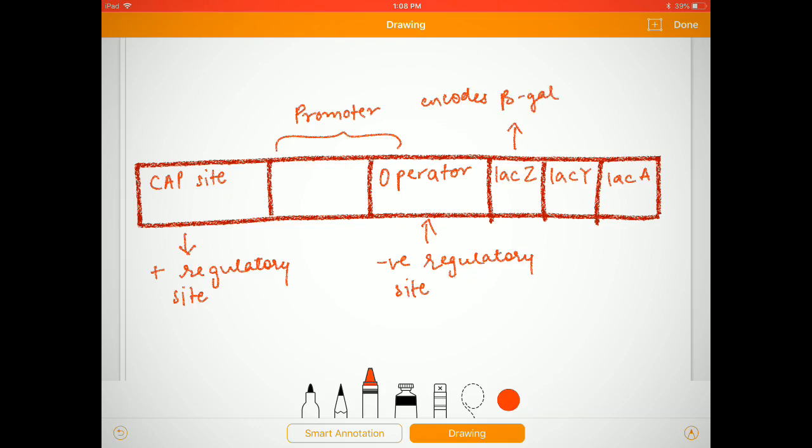Then there is lac z, which basically encodes for beta-galactosidase. Now this enzyme has the capacity to split lactose into monosaccharides. Then we have lac y, which encodes permease, which helps the lactose to come inside the cell.